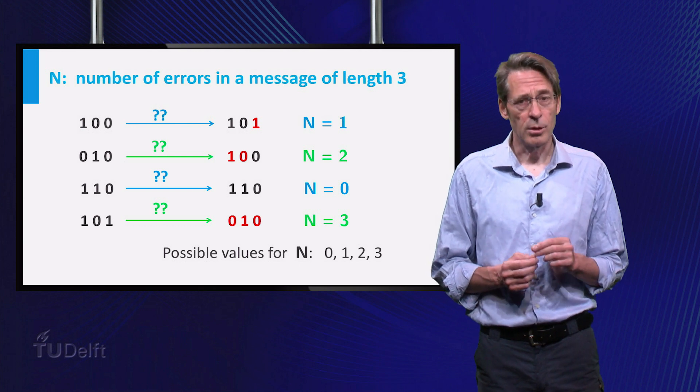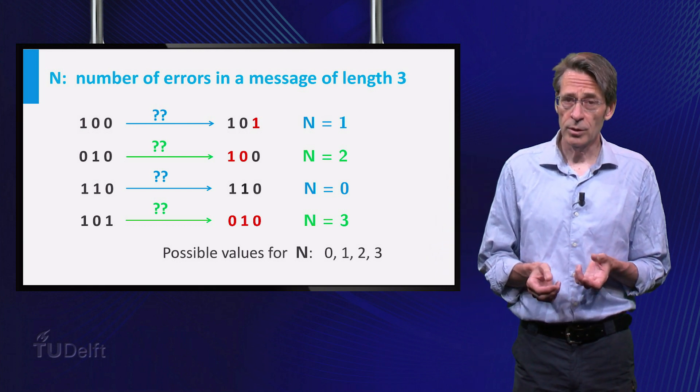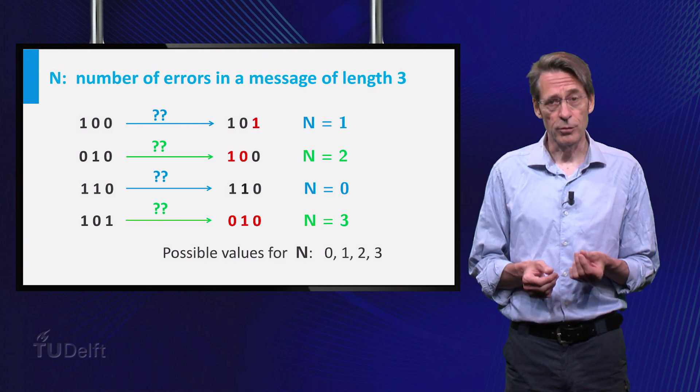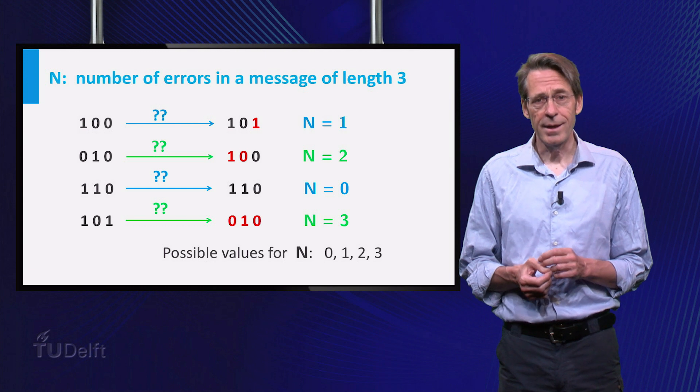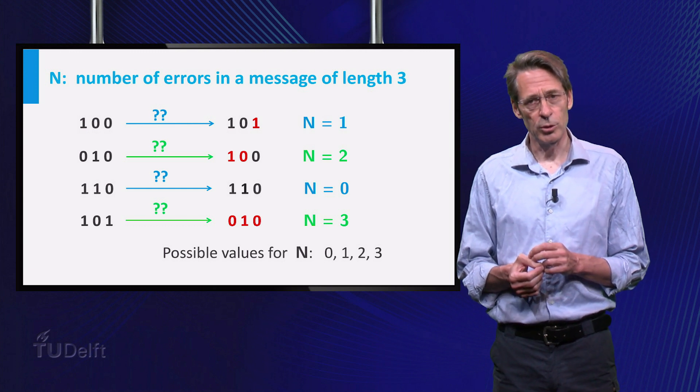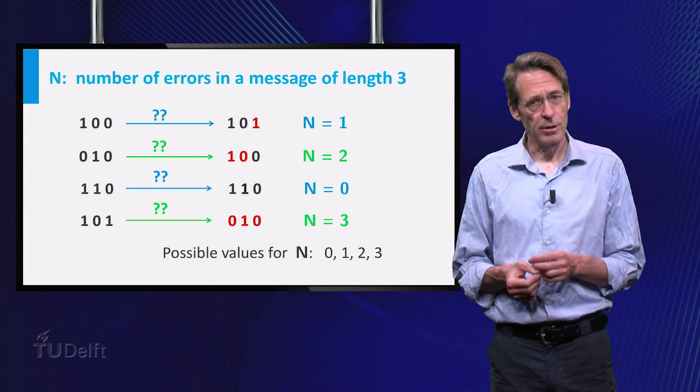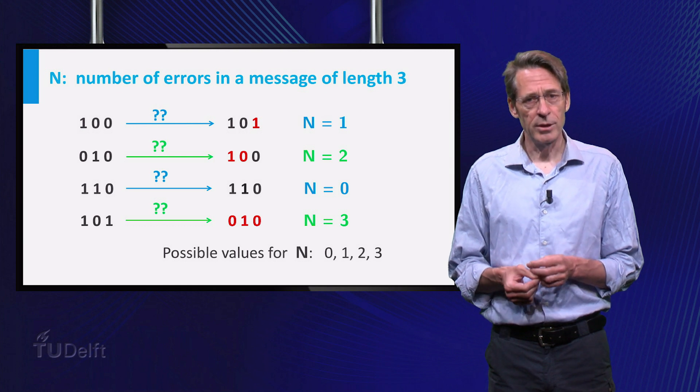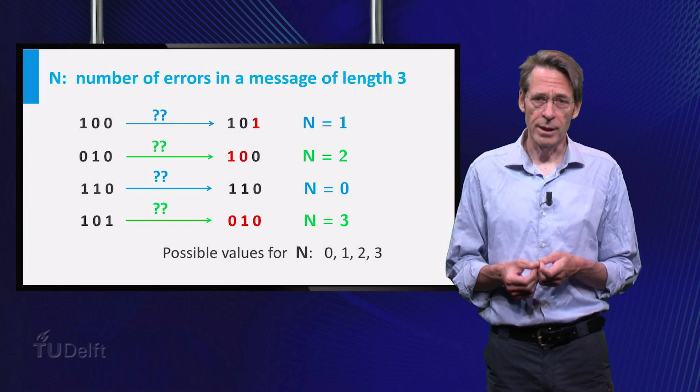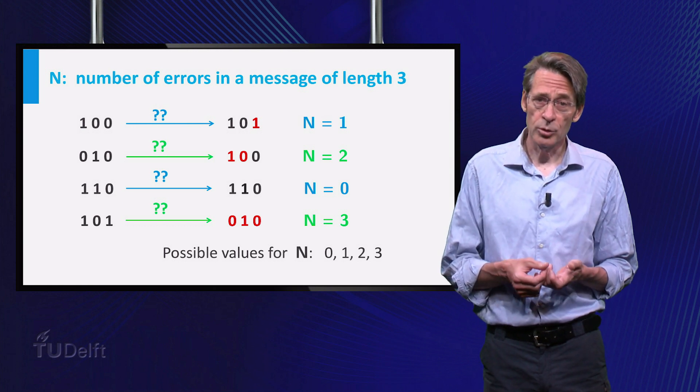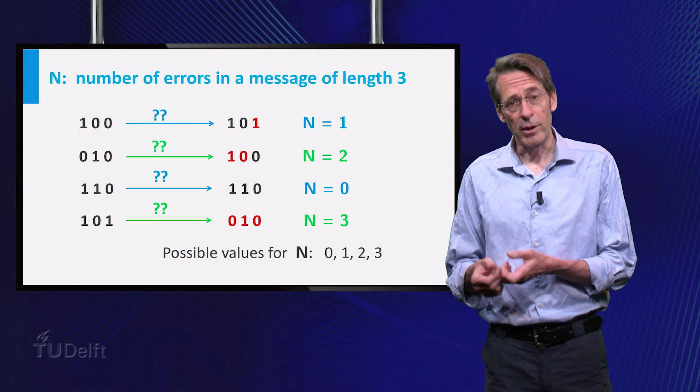Next what are the probabilities of these values? In other words, what is the probability mass function of N? In class you will learn that N has a so-called binomial distribution, but for this relatively small example the probabilities are found just from scratch.